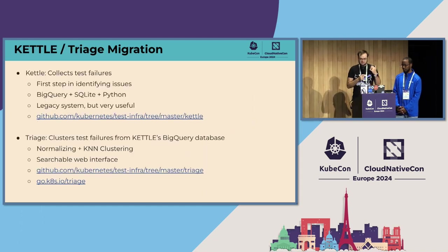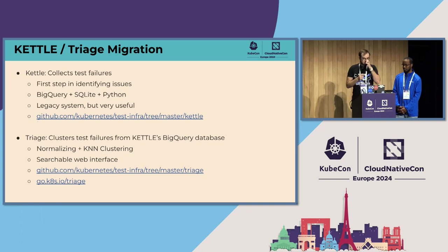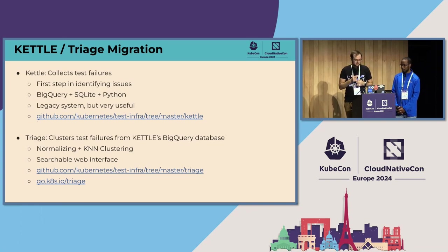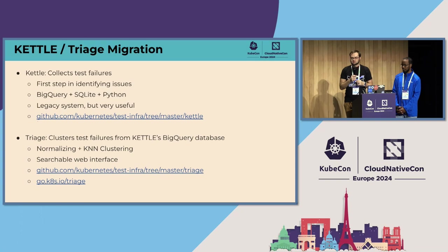We also have this test triage pipeline. Basically, we collect all the logs from our tests, get all the errors, and put them into BigQuery — that's Kettle, the first part. Then we have this tool brilliantly named Triage. It actually does KNN clustering after doing some normalization on the logs to find common failure modes happening across tests. So we can track when something has become flaky or started to break in Kubernetes — we'll see trends where some failure mode has started to increase. This tool is used by some of our most prolific contributors to find where Kubernetes has regressed.